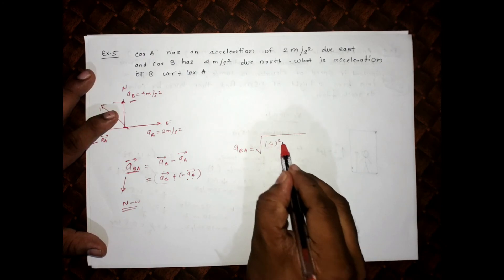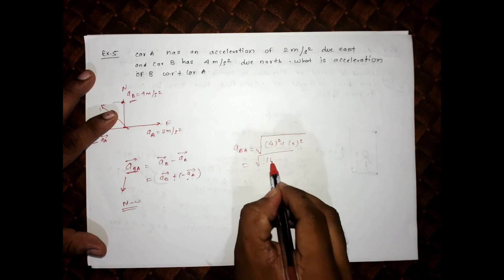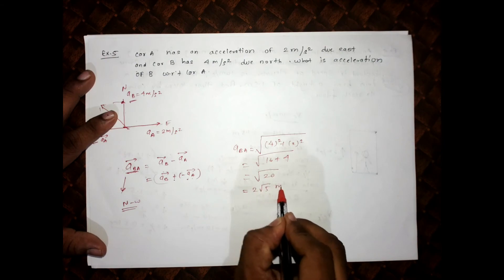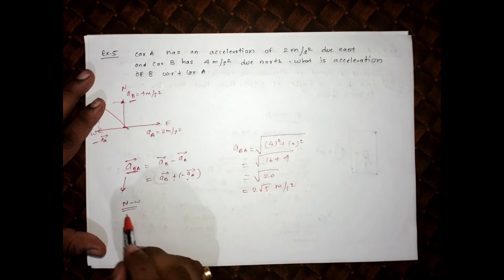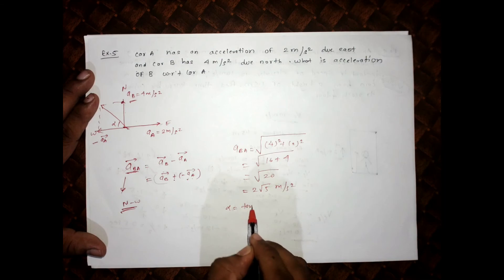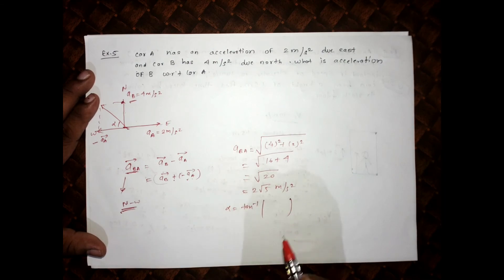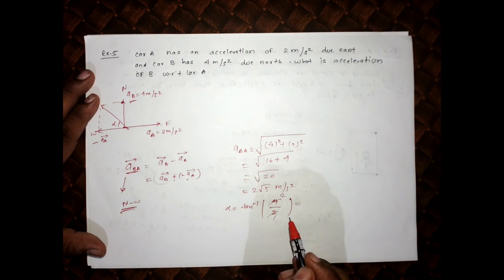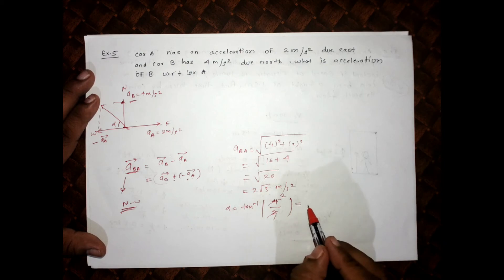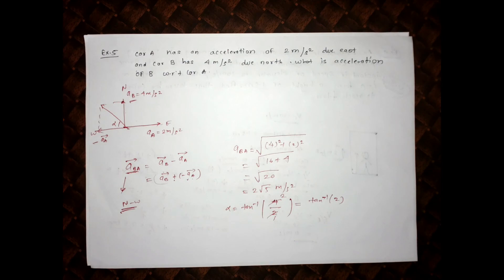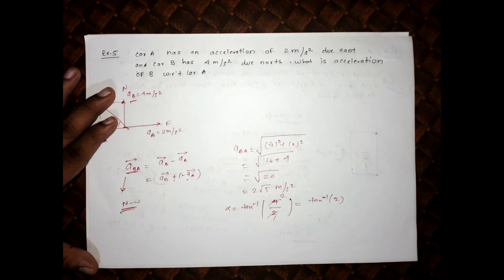To find the magnitude, we use Pythagoras: √(4² + 2²) = √(16 + 4) = √20 = 2√5 meter per second square. To find the angle alpha, alpha equals tan inverse of (y-component / x-component) = tan inverse of (4/2) = tan inverse of 2. So the direction is tan inverse 2 from west towards north.